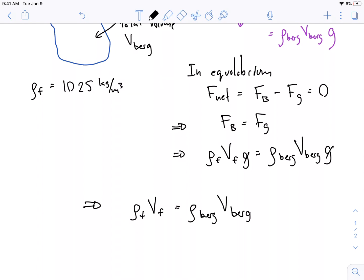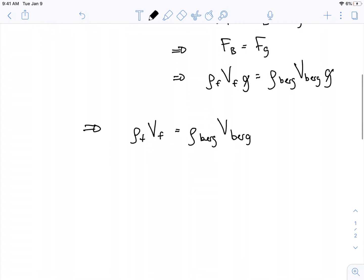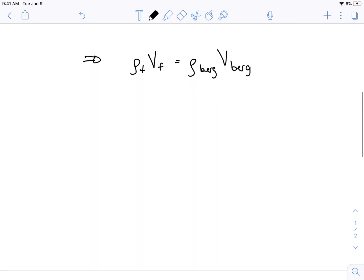So it sort of looks like we're stuck at this point because we don't know the volume of the iceberg, we don't know the volume of the fluid displaced. But we're given a very specific piece of information. We're told that 10 percent of the iceberg is above the water.